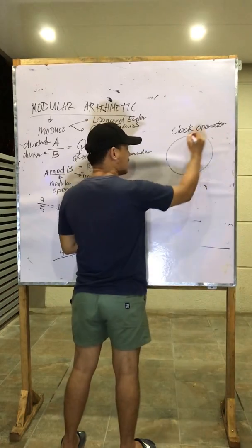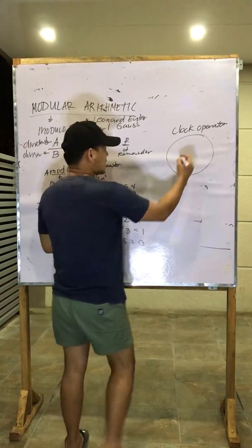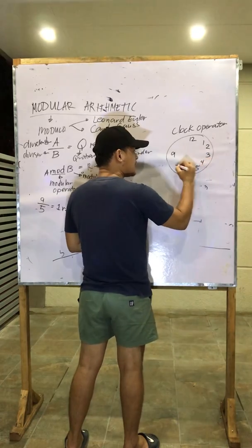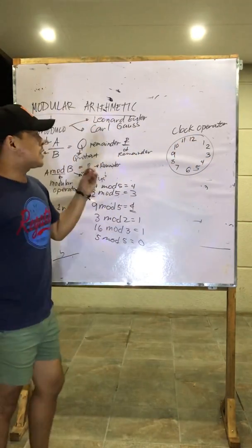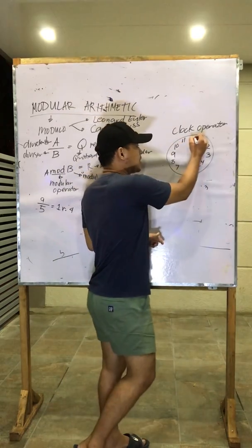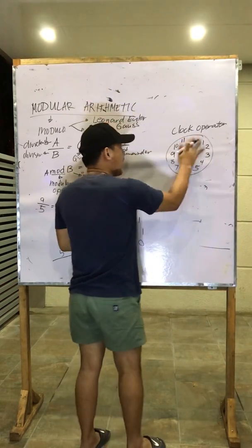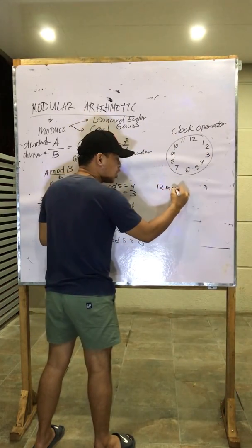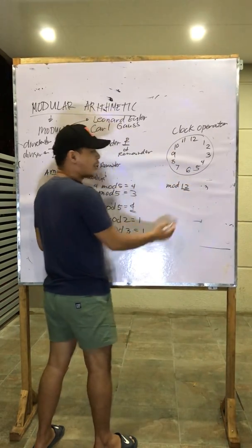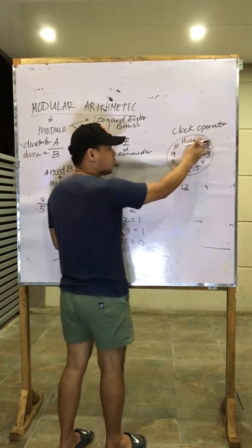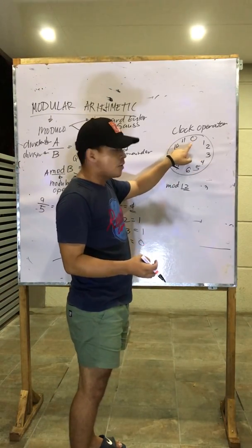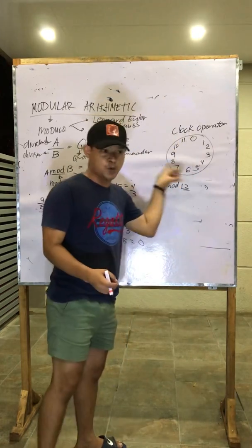Let us understand this concept using the clock operator. We have numbers 1 through 12 on the clock. Since 12 is our modulus, we change it to 0. Therefore, the possible remainders are numbers from 0 to 11. These are the choices for the remainder.